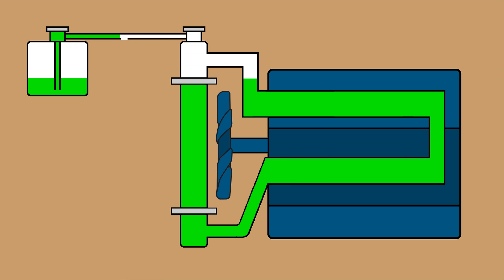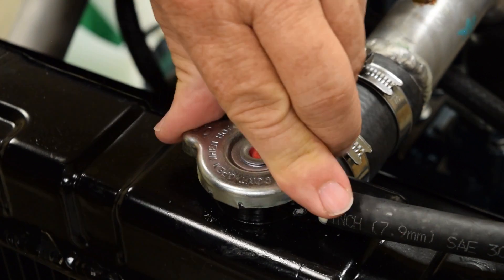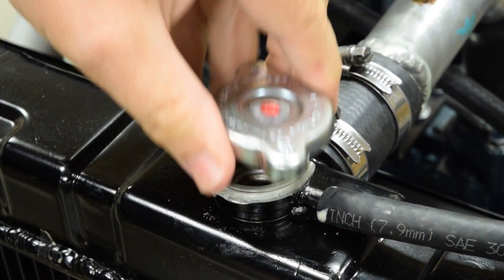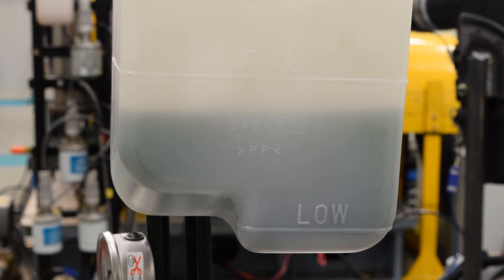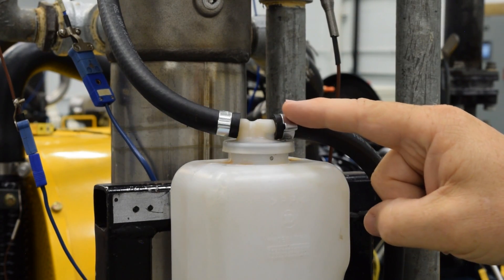Over time, the coolant level will get lower and lower from pushing out coolant and drawing in air. So check your coolant level daily at both the radiator and coolant bottle before you start the engine. Inspect the hose from the radiator to the bottle for leaks.